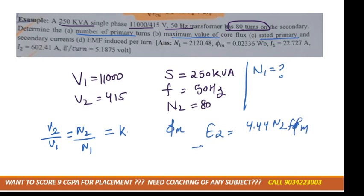And rated current. Rated current means we need to calculate I1. How can you calculate I1? That is S equals V multiplied by I. If we take V1, then it would be I1.